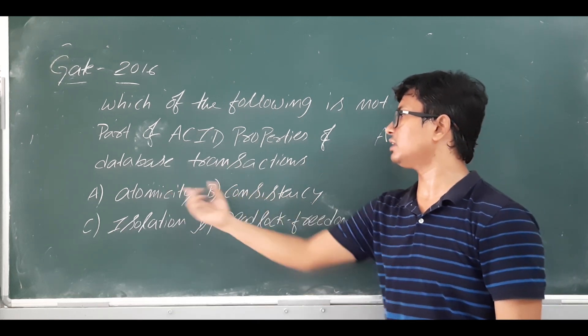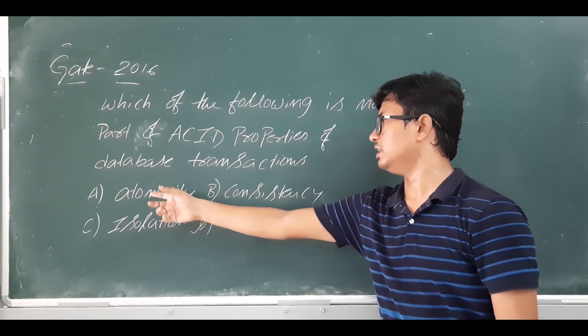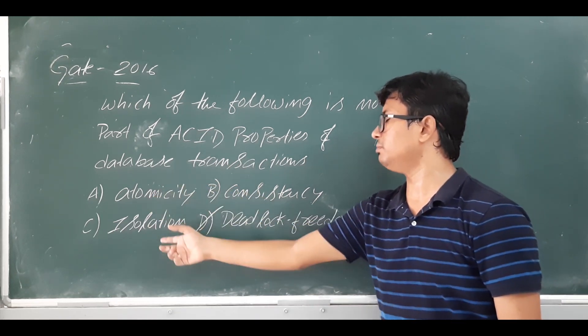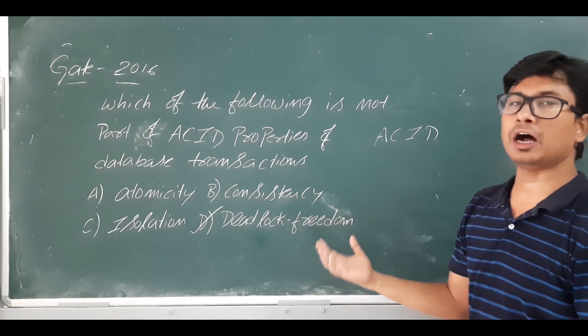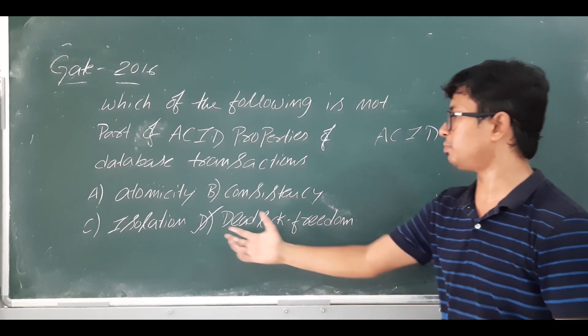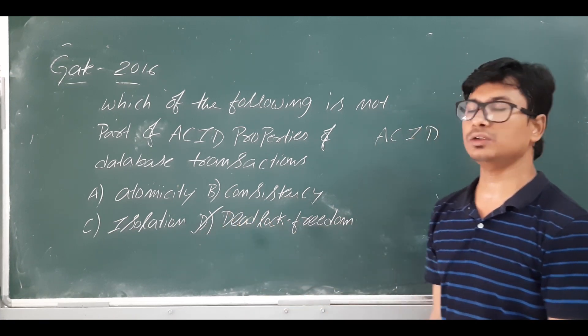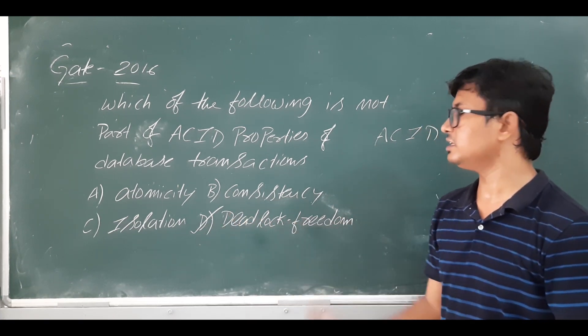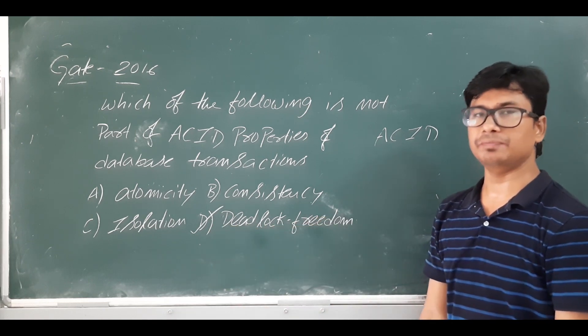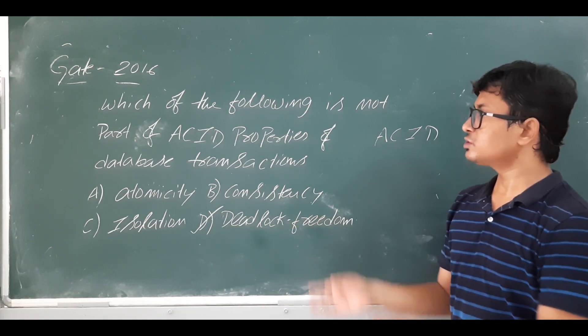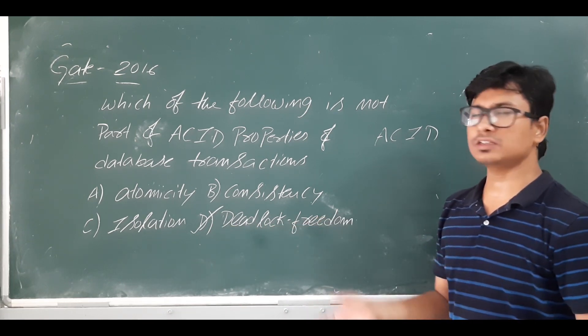If they had asked which IS part of ACID properties, the answer would be A, B, and C. But since they asked which is NOT part of ACID properties, the answer is D — deadlock freedom.